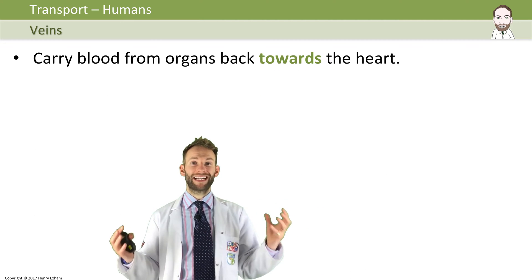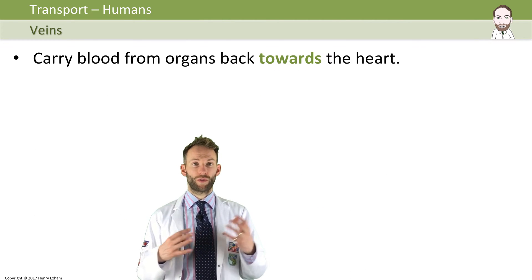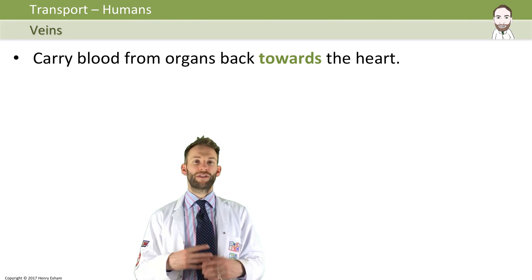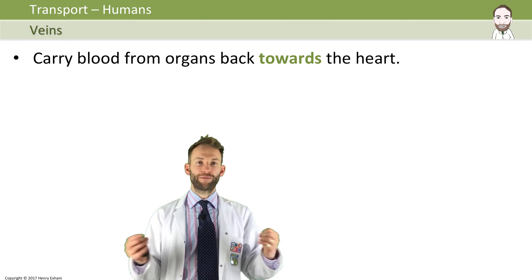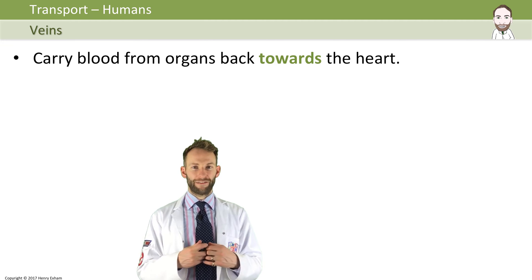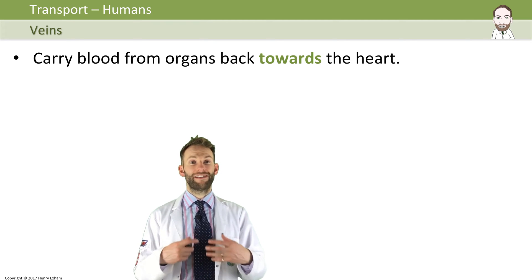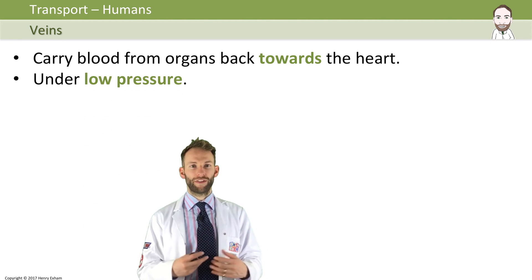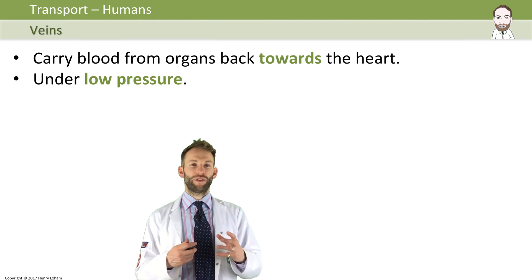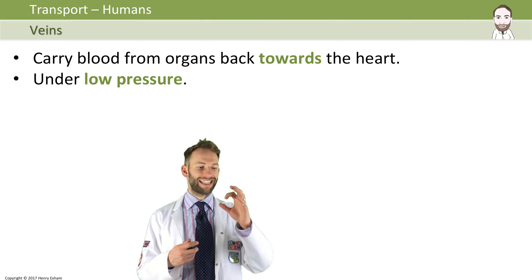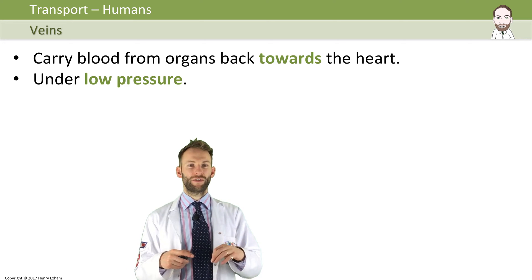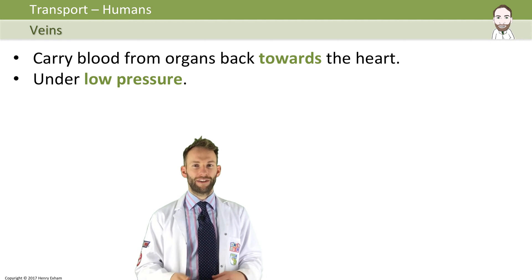Veins carry blood back to the heart from the organs. Once the blood's gone through your organs and all the oxygen and nutrients have been used up, it flows back to the heart in veins. The blood at this point is under very low pressure — it's not being pumped by the heart anymore. Therefore the veins need to have a much bigger lumen, which is the hole in the middle of the blood vessel, to allow the blood to flow with not very much resistance.